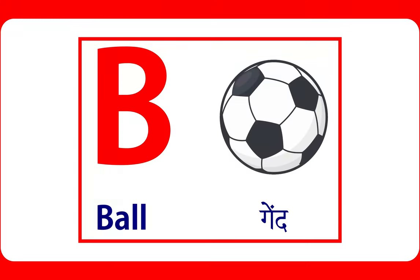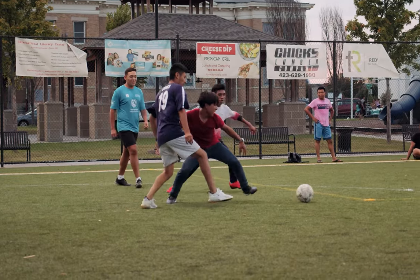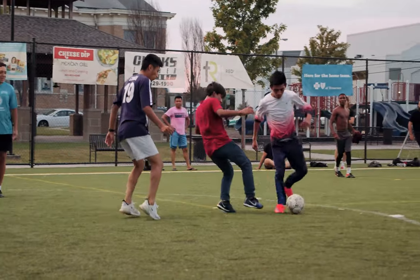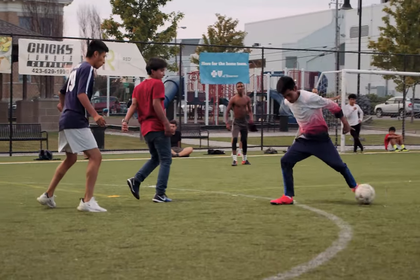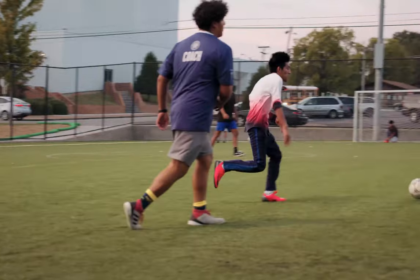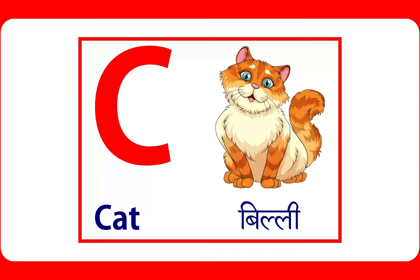B is for ball. Ball is used for playing. C is for cat. Cat is an animal.